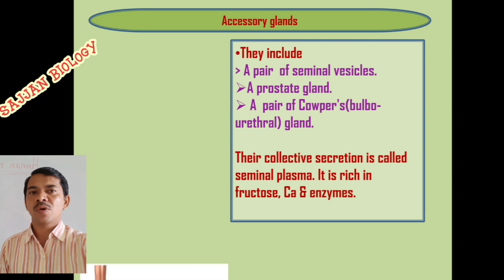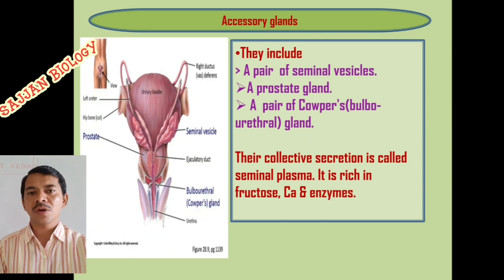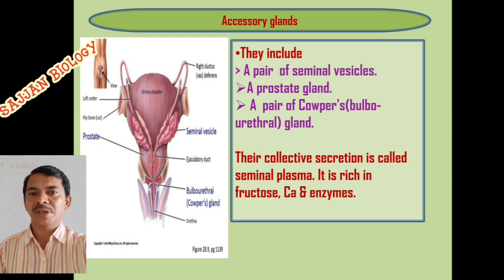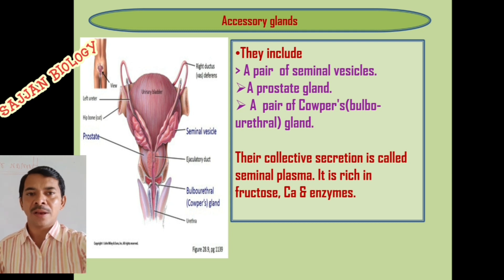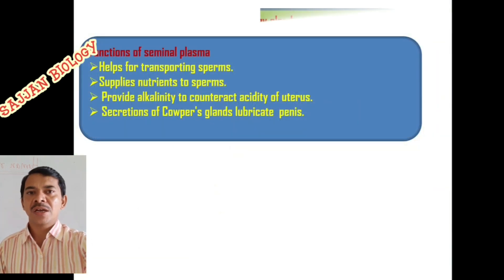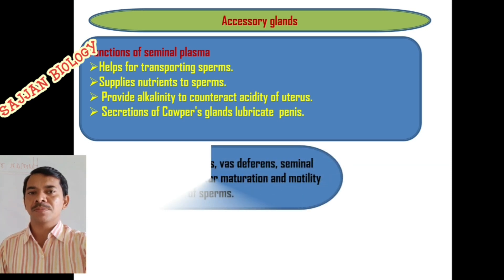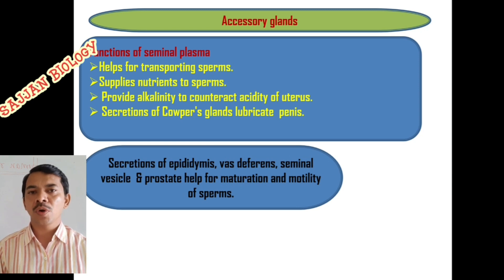There are totally three accessory glands: a pair of seminal vesicles, a prostate gland, and a pair of corpus glands — also called bulbo-urethral glands. Their collective secretion is called seminal plasma or seminal fluid. It is rich in fructose, calcium, and enzymes. The seminal plasma helps in the transportation and nutrition of sperms.